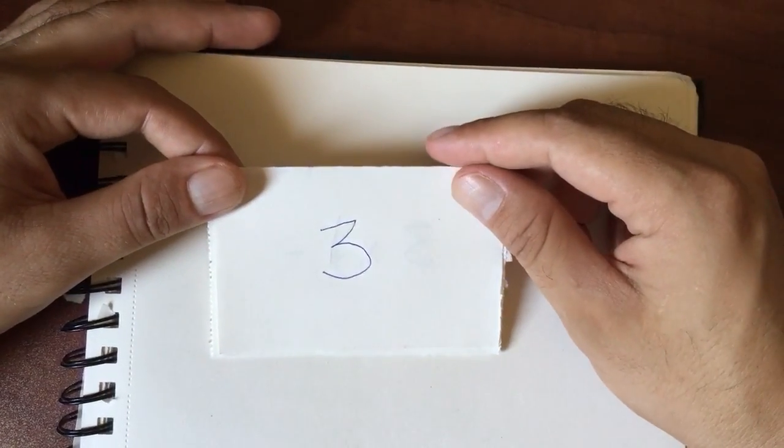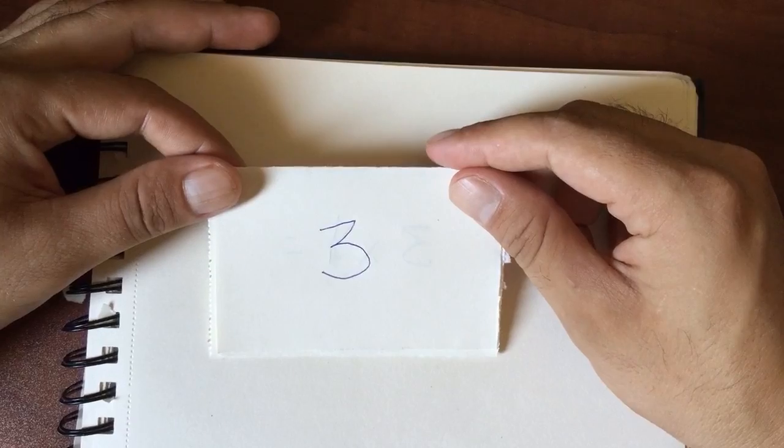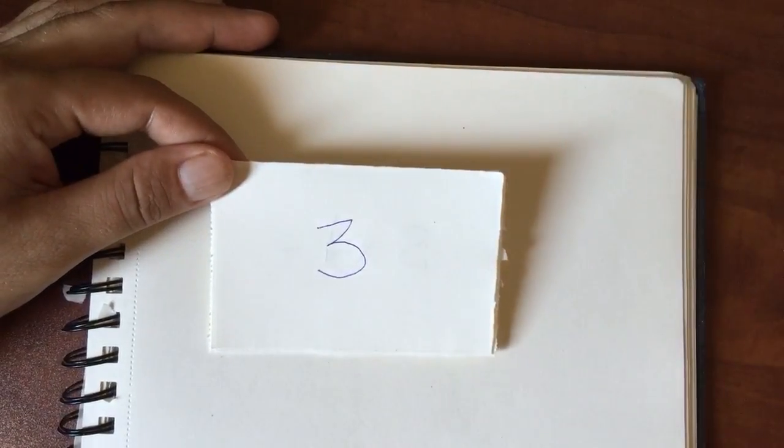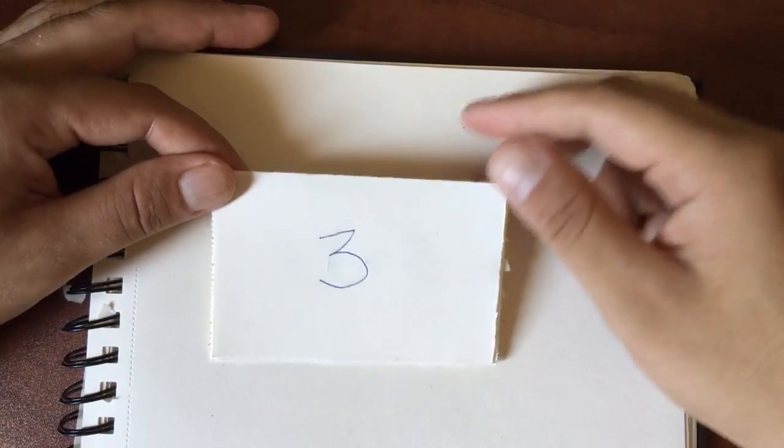On the next standard, it's required that you know from memory all the products of one-digit numbers. What this means is that you know all your multiplication facts. This is very important by the time you get to middle school or high school.